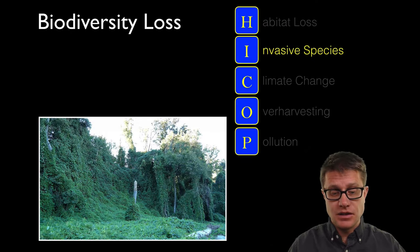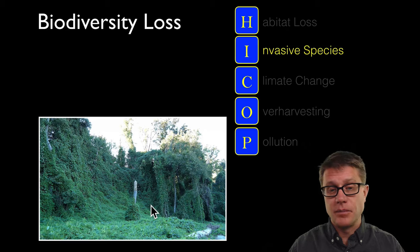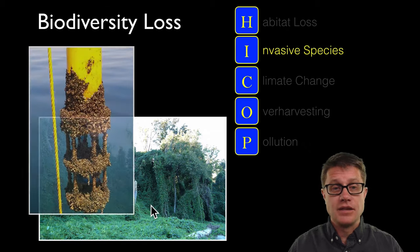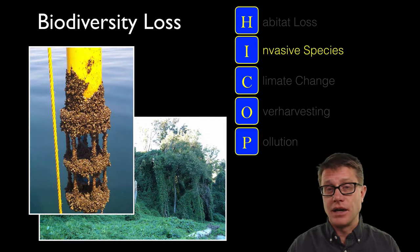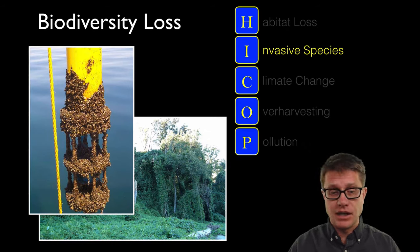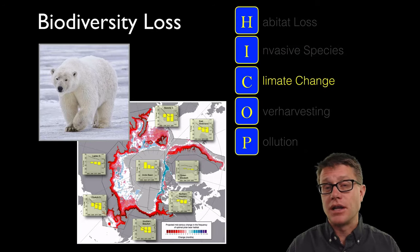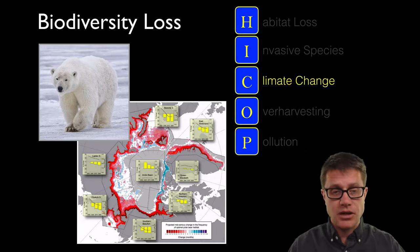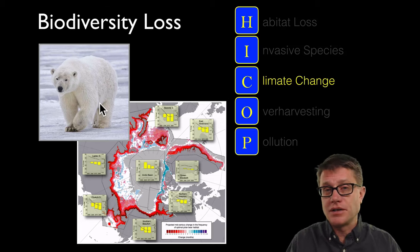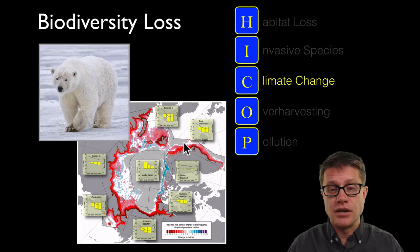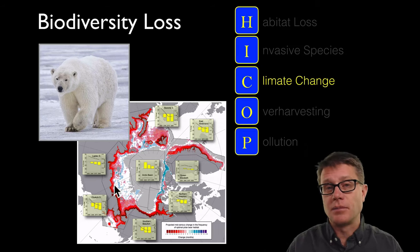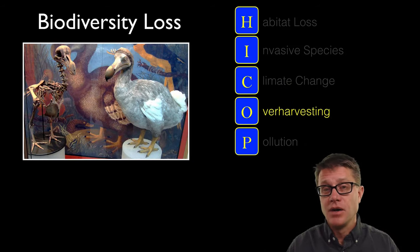Invasive species — this is kudzu, a plant that was brought from Asia. These are the zebra mussels in the Great Lakes that are really wreaking havoc; they came from the Mediterranean. We are also seeing climate change impacting biodiversity. If we look at the polar bear for example — will they go extinct? It is hard to tell. But if we look at all the areas where they used to do well, we are seeing a decrease in the optimal polar bear habitat.